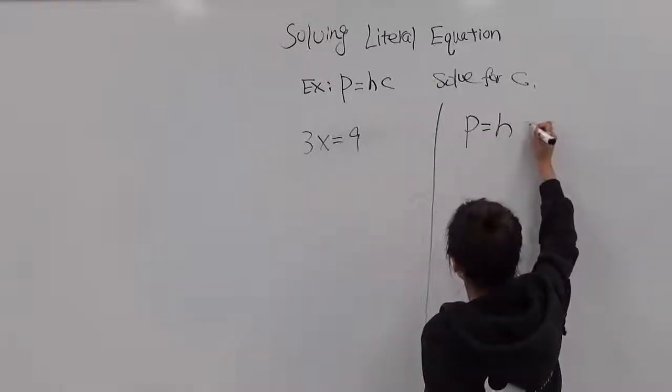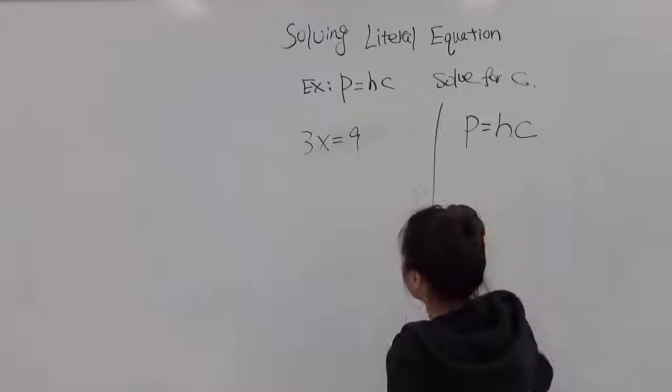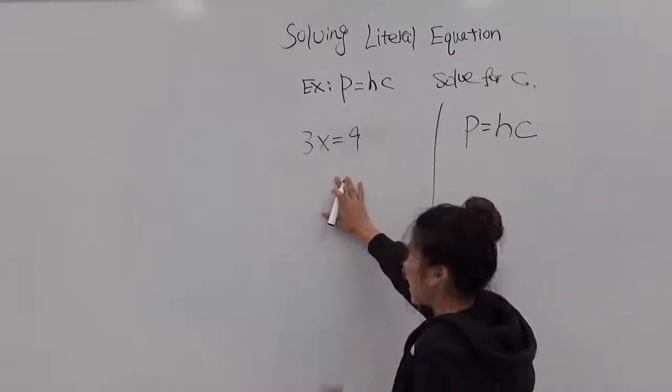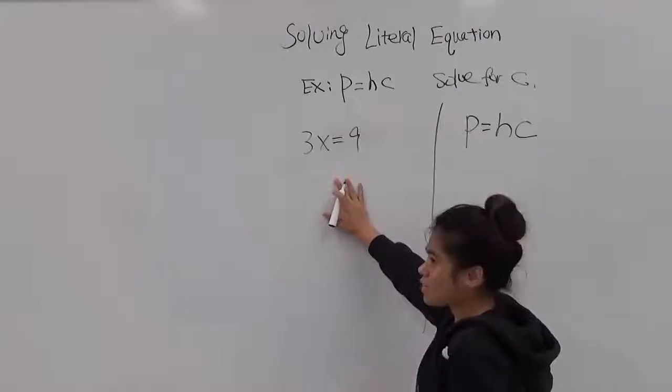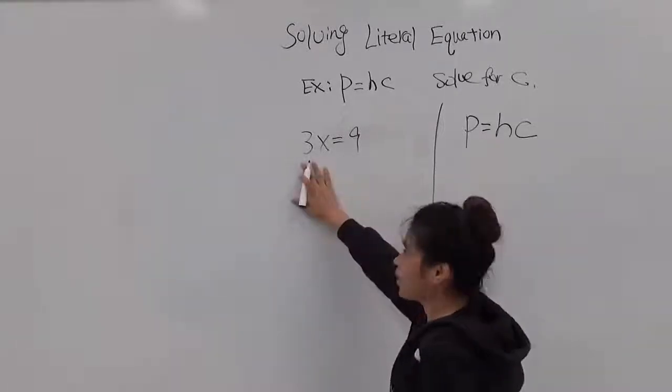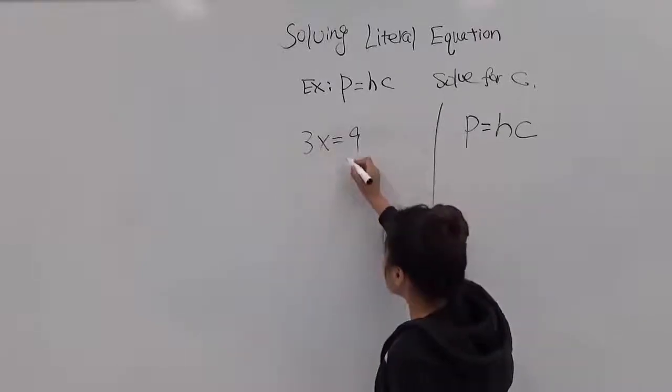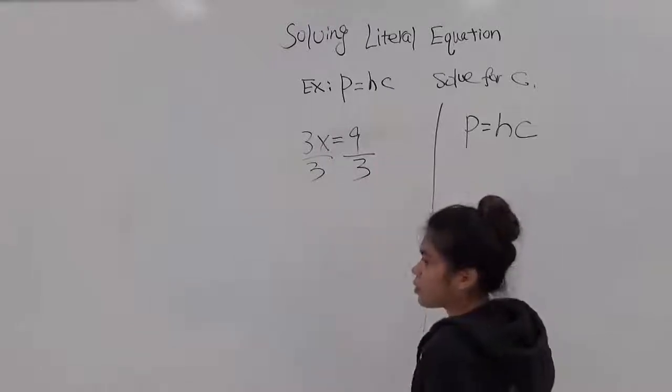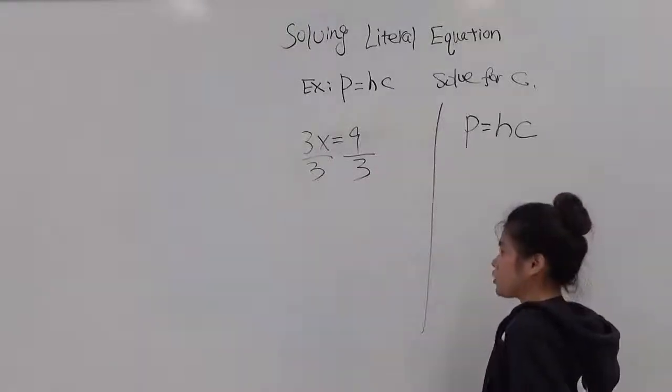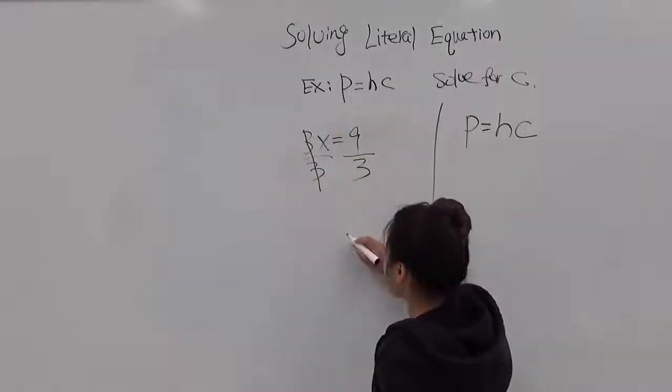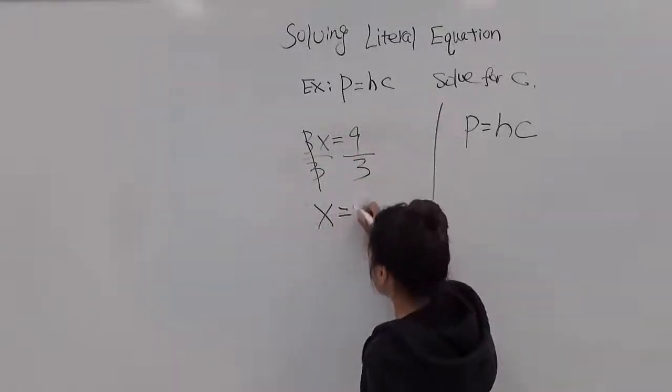We have p equals h times c. If you're asked to solve for x, you want to isolate x. In order to isolate x, you need to do inverse operations because 3 has been multiplied by x. So you want to divide by 3 on both sides because multiplication and division are inverse of each other. So this will cancel out. So x equals 3.